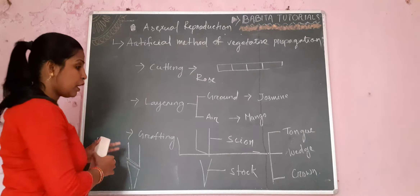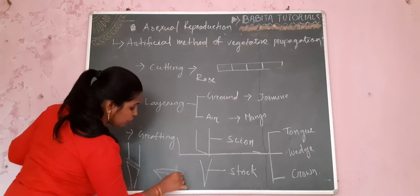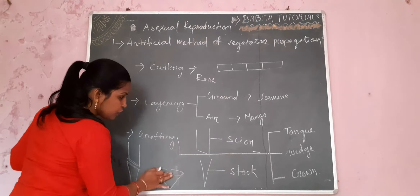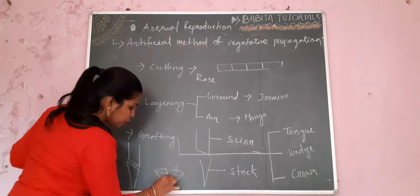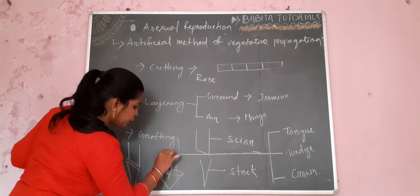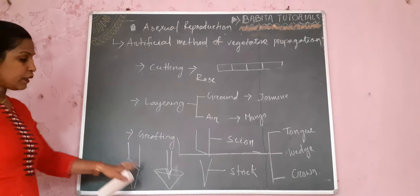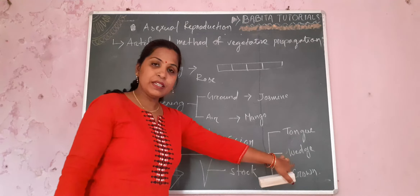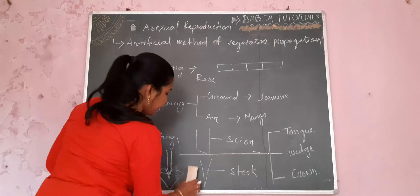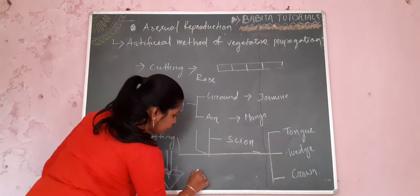But in some cases the stock will have a larger diameter than the scion. In that case, the stock has a V-shape cut and the scion is fixed under the V-shape of the stock. That type of grafting is known as wedge grafting. If two or three scions are inserted, then that type of grafting is known as crown grafting.